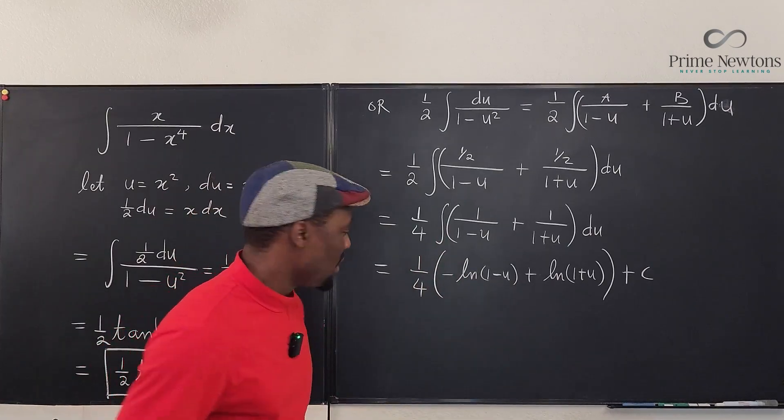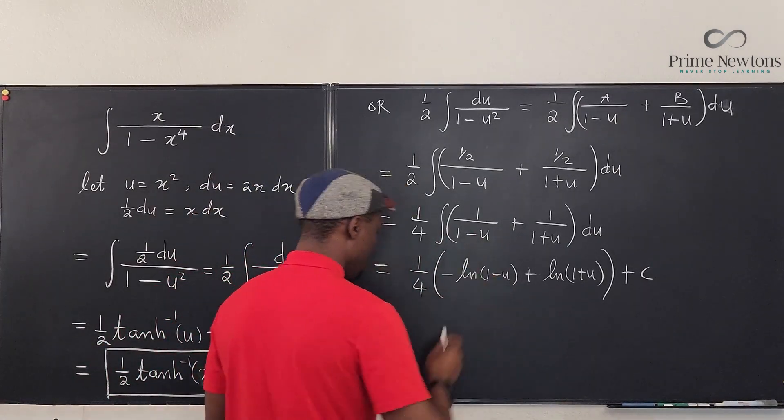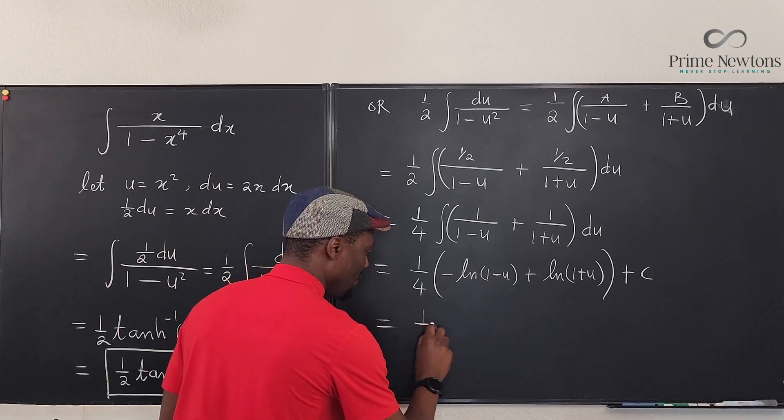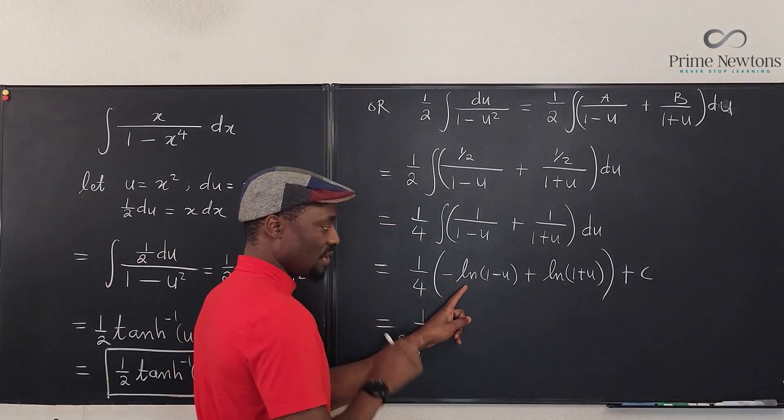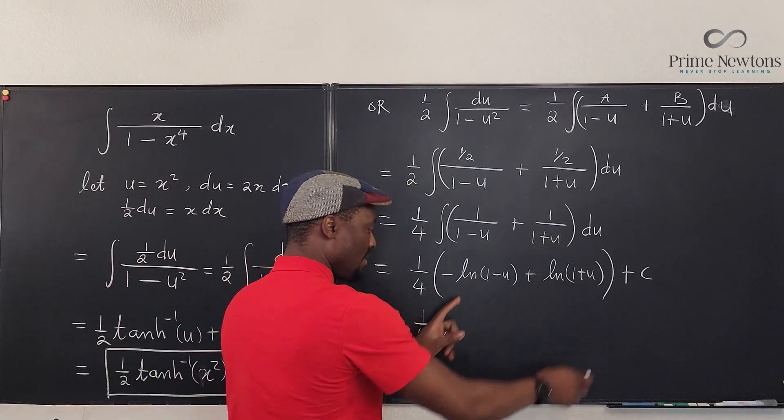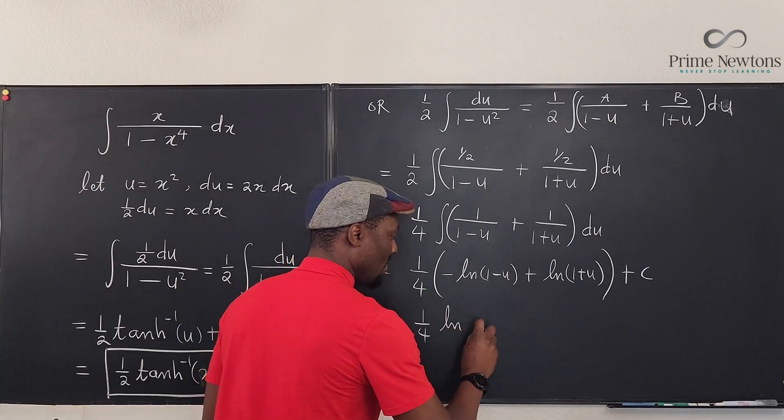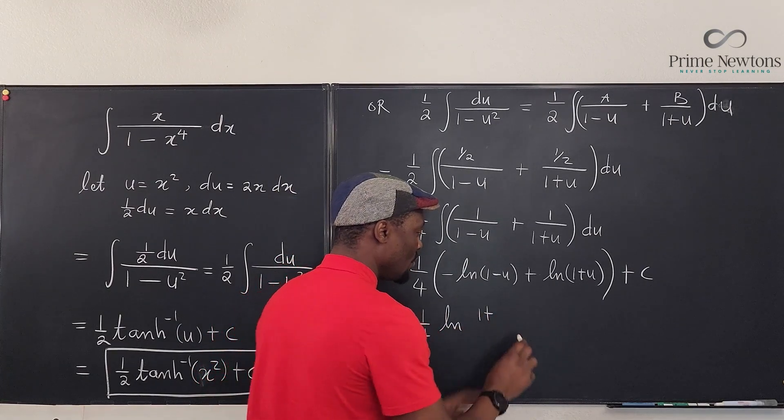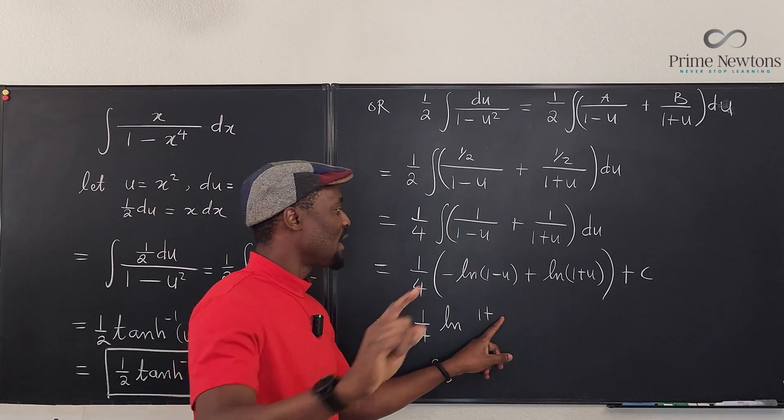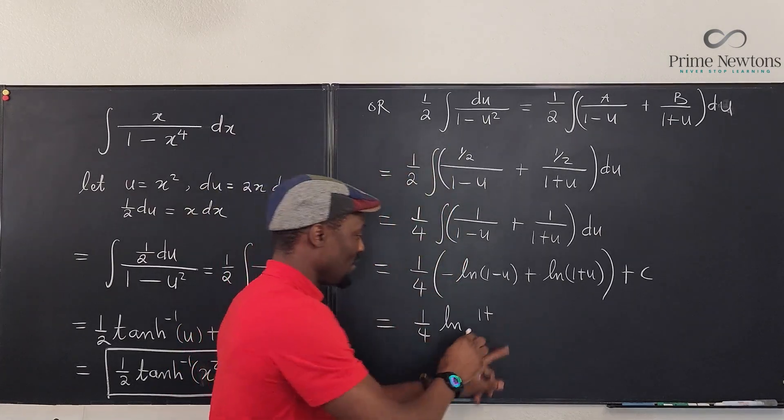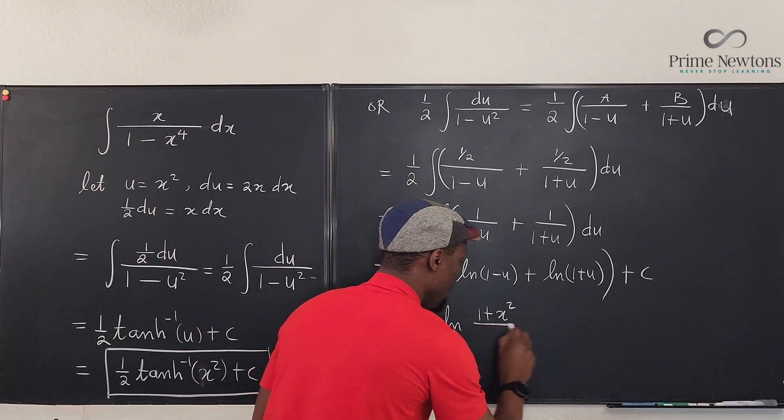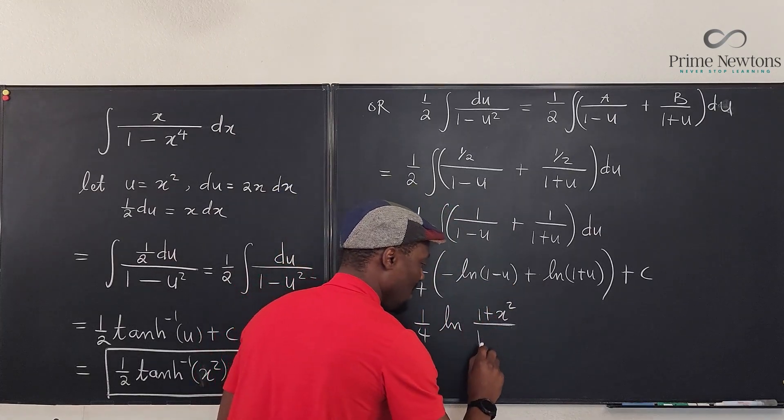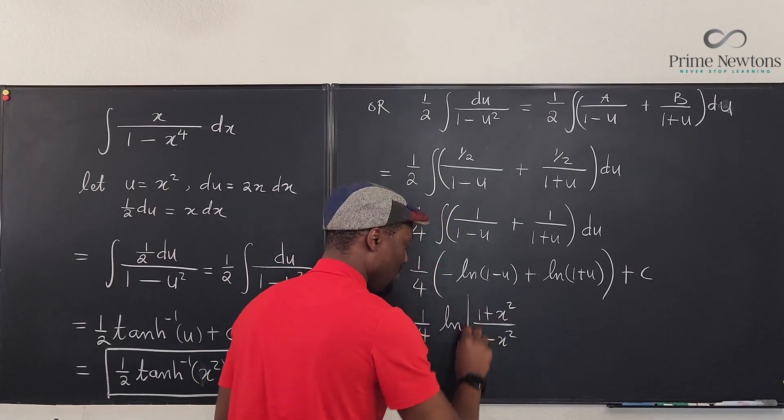Well we can combine them and we'll put the absolute value bars eventually. So this is going to be ¼ and because this is negative we can put it under and this is on top. So we can say this is the natural log of (1 + u) over (1 - u). But what is u? We said u was x². So I'm going to write x² over 1 - x², and we put the absolute value bars and you say plus C.